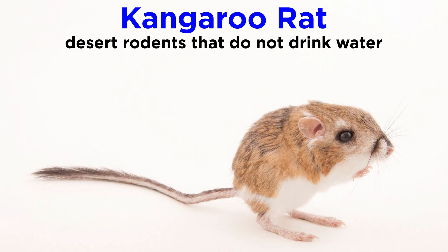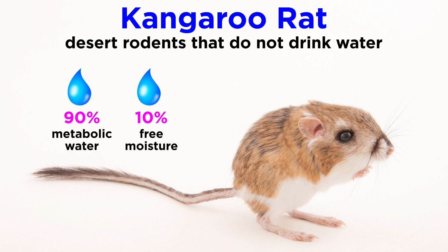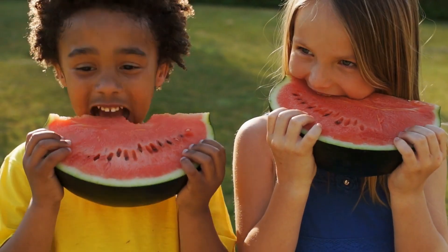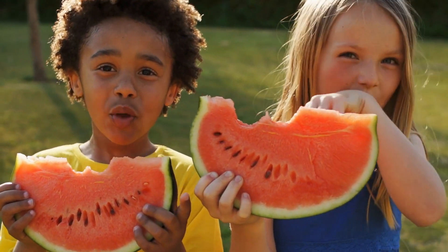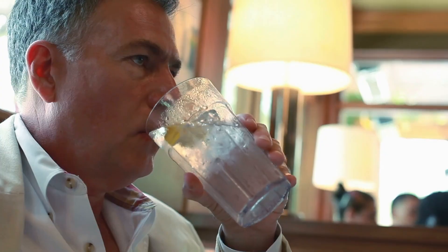Particularly revealing is a comparison of water balance in human beings, non-desert mammals that drink water, with that of kangaroo rats, desert rodents that may drink no water at all. Kangaroo rats acquire all their water from their food. Ninety percent is metabolic water derived from oxidation of foods, and ten percent is obtained from free moisture in food. Even though we eat foods with a much higher water content than the dry seeds that make up much of a kangaroo rat's diet, we still must drink half our total water requirement.